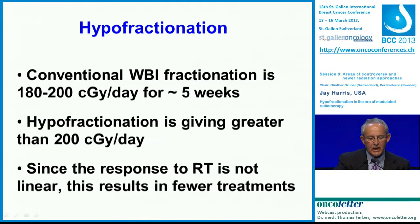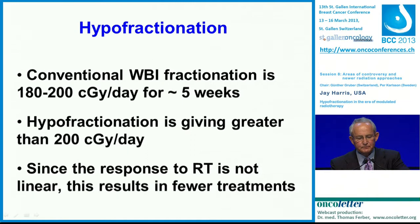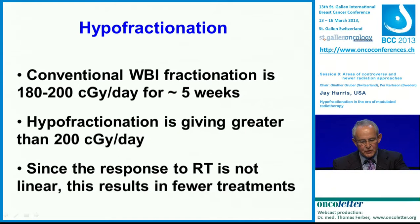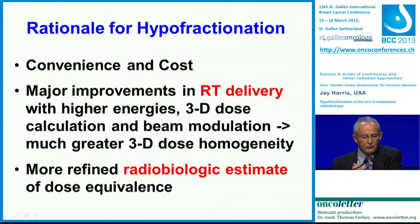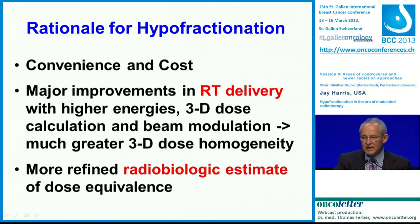So what do we mean by hypofractionation? Conventional whole breast irradiation is 1.8 to 2 gray per day, given for about 5 weeks, and frequently is followed by boost irradiation. Hypofractionation means giving more than 2 gray per day, and since the response to radiation is not linear, this results in fewer treatments for the patient. The rationale for hypofractionation is both convenience to the patient and costs. If we can deliver treatment which is equally safe and effective in a shorter period of time, that's really great for our patients and saves money for the system.